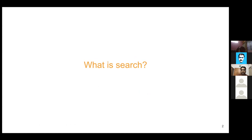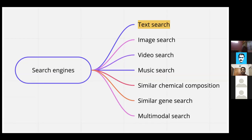What is search? We inherently understand that search is something we use to find information relevant to our query. We mostly think about search in the field of text, but there are many different kinds available: image search, video search, music search on Spotify, video search on YouTube, pharma search for drug discovery using similar chemical compositions, gene search engines for genetic modification, and multimodal search using text, image, and video together.